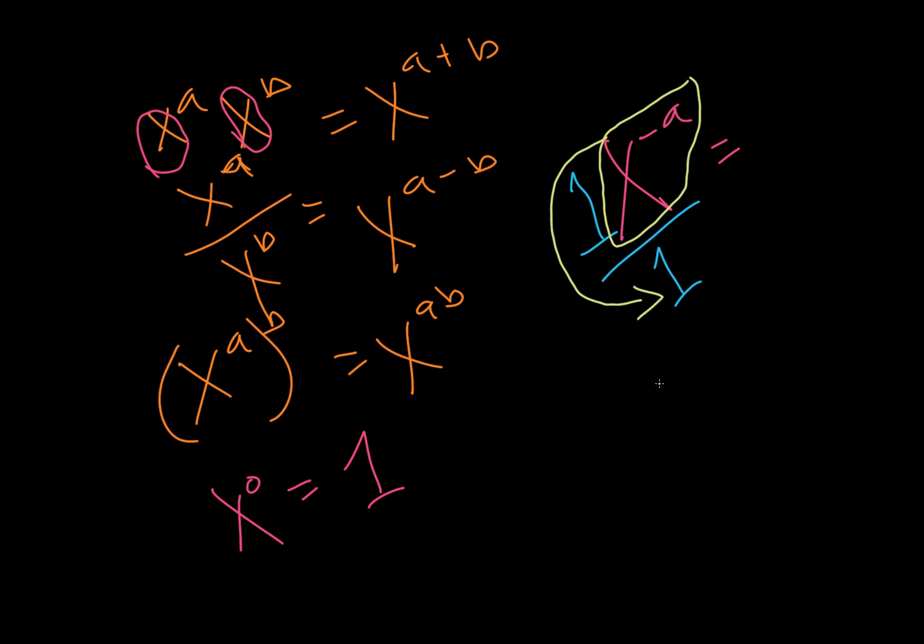So if we were to do that, we'd be left with the 1 on top, still have the 1 on the bottom. And now it's x to the positive a. When we move it down to the bottom, it becomes a positive a.